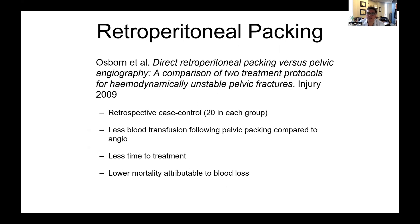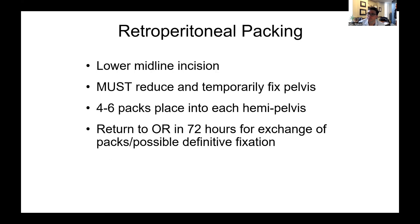Studies have shown that retroperitoneal packing has been very effective in reducing mortality in pelvic ring injuries. It's much more commonly done in Europe, but some centers in the United States are doing this as their routine treatment for pelvic bleeding. As far as technique, you want a lower midline incision for damage control reasons — I favor a vertical incision. You must reduce and temporarily fix the pelvis, then place four to six packs in either hemipelvis. They need to come back to the OR ideally at 48 hours, or 72 hours, to exchange or remove the packs depending on how the patient is doing.